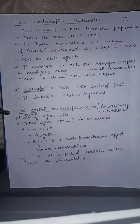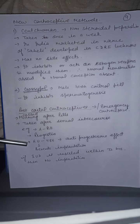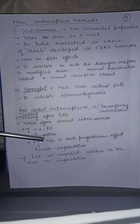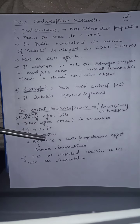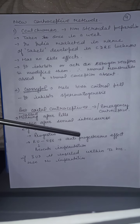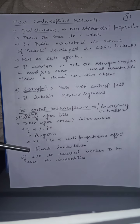Next are post-coital contraceptives or emergency contraceptives. These are also called morning after pills, taken after sexual intercourse. Examples include iPill, progestin, and RU486.